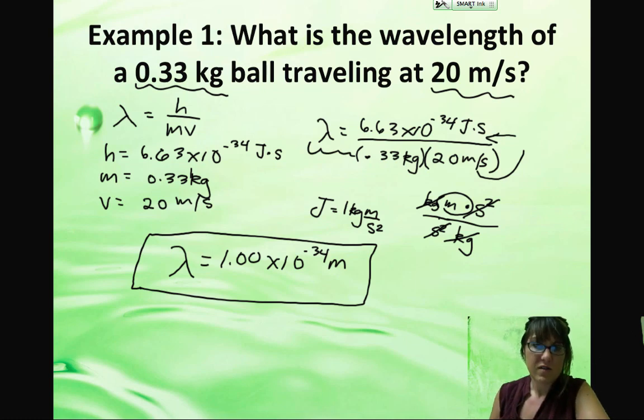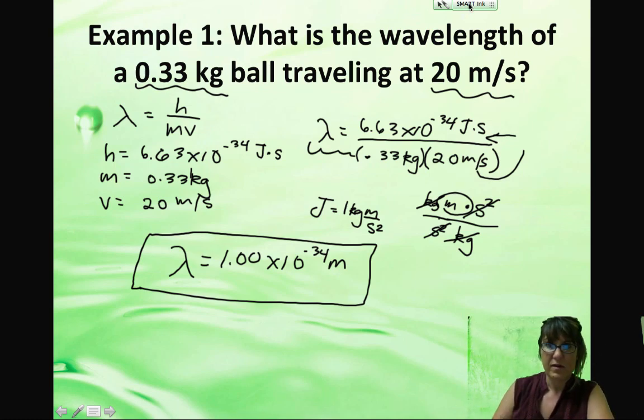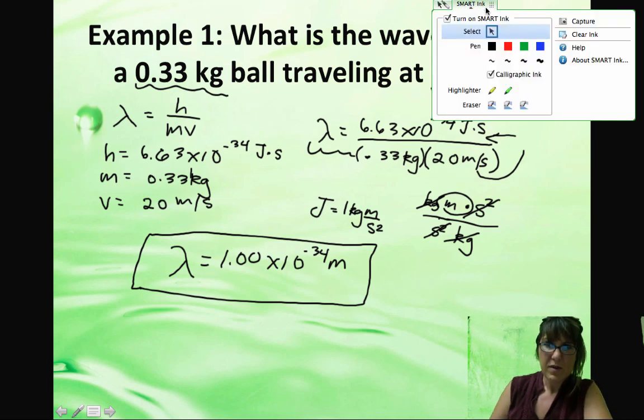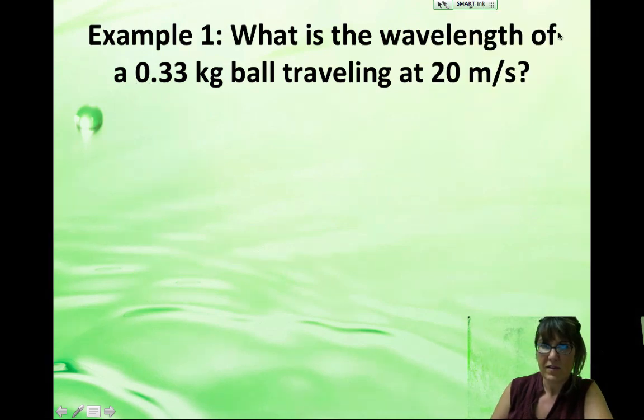That wavelength is so small that we're not going to even be able to measure that. It's too tiny. Negative 34, that's smaller than what we can even measure. So that's why baseball, in Major League Baseball, doesn't wave around. It has a wavelength, but the wavelength is so small you can't even see it.